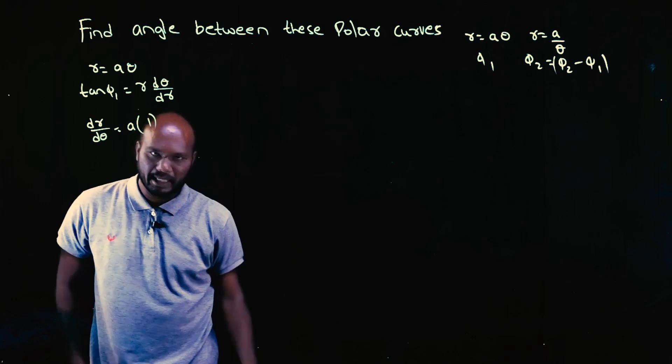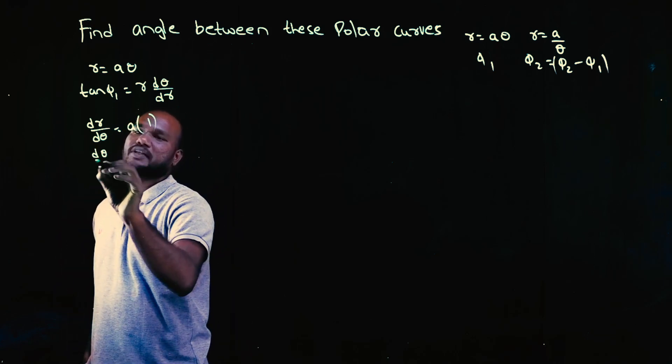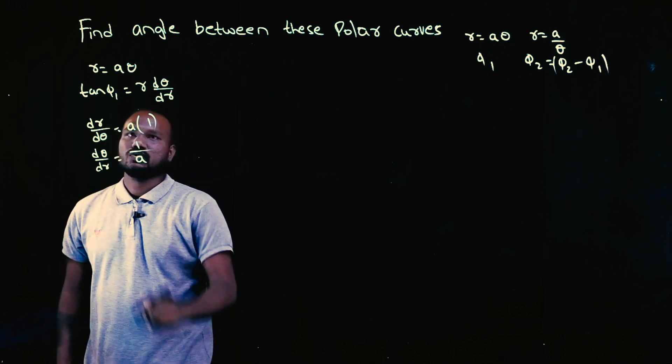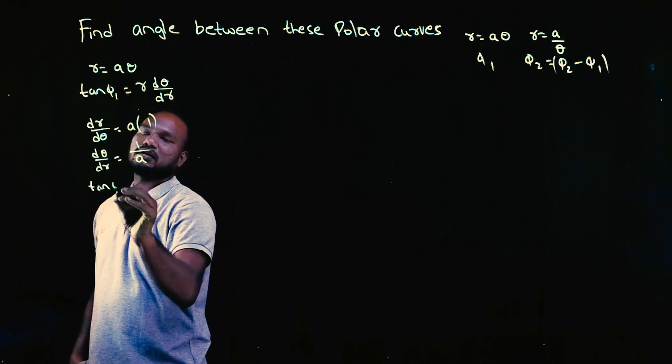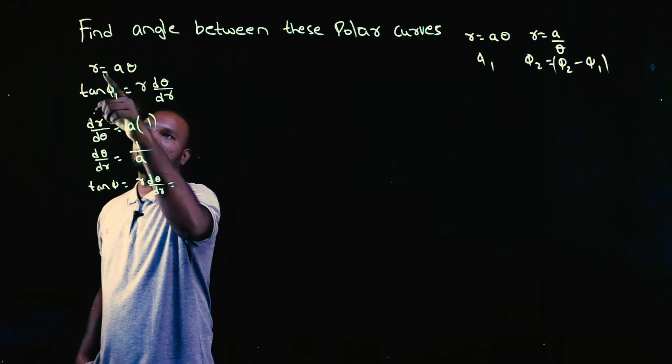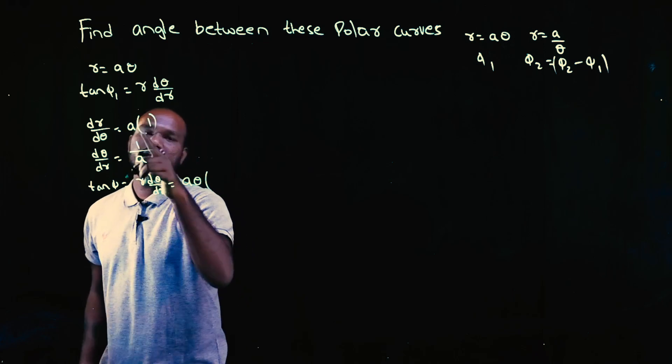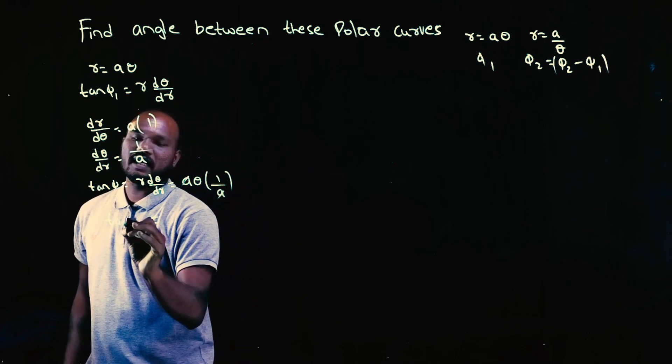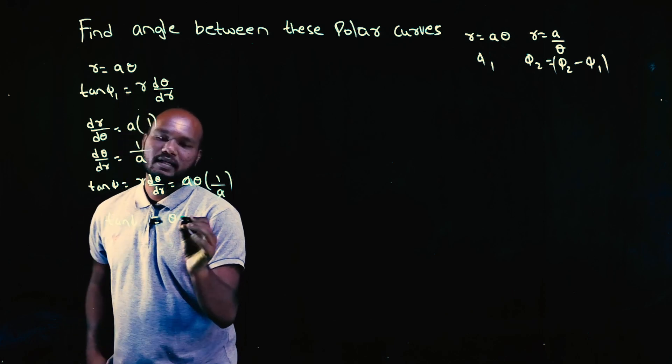Theta differentiation is 1, right? But I'm not interested in dr/dθ, I'm interested in dθ/dr. So 1/a. Tan φ is equal to what? r·dθ/dr, that is equal to what? r value is a·θ, dθ/dr is 1/a. So a cancels, so tan φ is equal to θ.